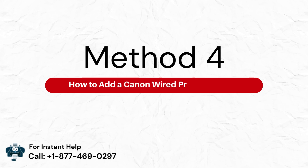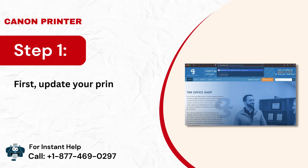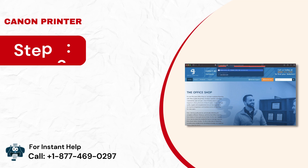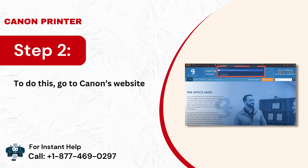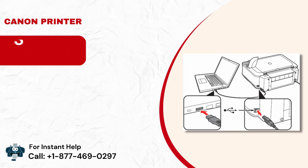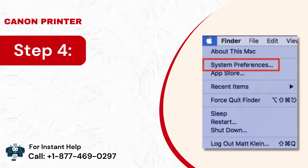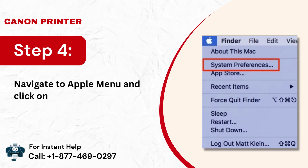Method 4: How to add a Canon wired printer to Mac. Step 1: First, update your printer driver if necessary. Step 2: To do this, go to Canon's website, download, and install the driver following on-screen instructions. Step 3: Now, connect the USB cable of your printer with the Mac device and printer. Step 4: Navigate to the Apple menu and click on System Preferences.